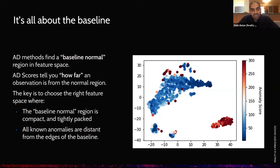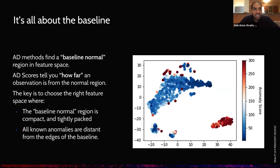In terms of implementation, it's all about the baseline. Anomaly detection methods find a baseline normal region in a feature space, and we have anomaly detection scores that tell you how far an observation is from the normal region. The key to implementing a robust anomaly detection solution is to find the right feature space in that data set. Number one: establish a good normal baseline, which is compact and tightly packed, as you can see in the blue cluster. Also, feature spaces for known anomalies should be distant from the edges of that baseline, as you can see in the red cluster.